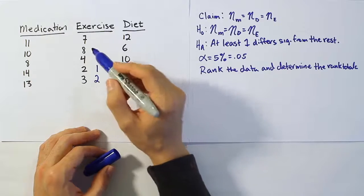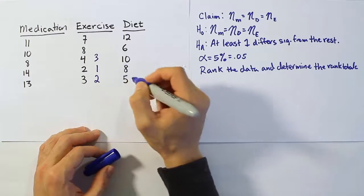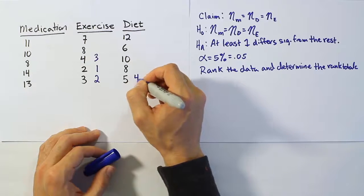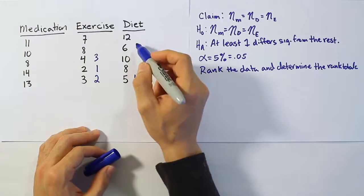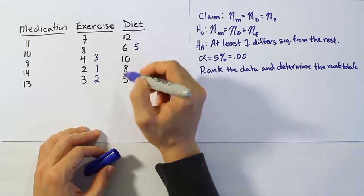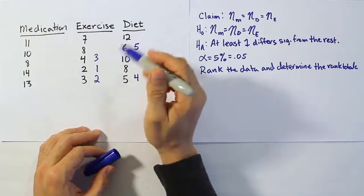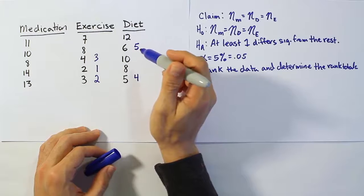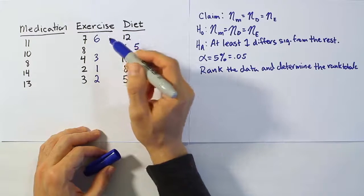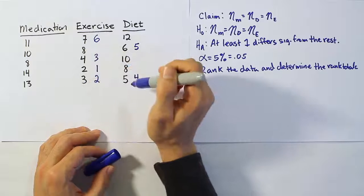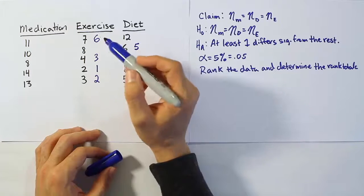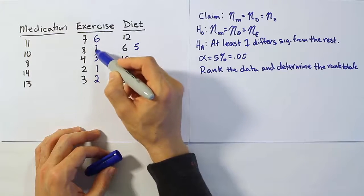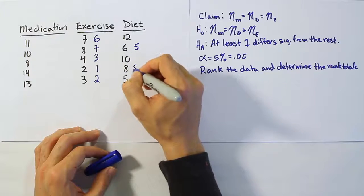From there, let's look. 3 would be rank 2. Is there any other 3s? No. How about 4? 4 would be rank 3. Then 5 would be rank 4. Then 6 would be rank 5. Any other 6s? No. Then we'd be 7. 7 would be rank 6. Any other 7s? No.